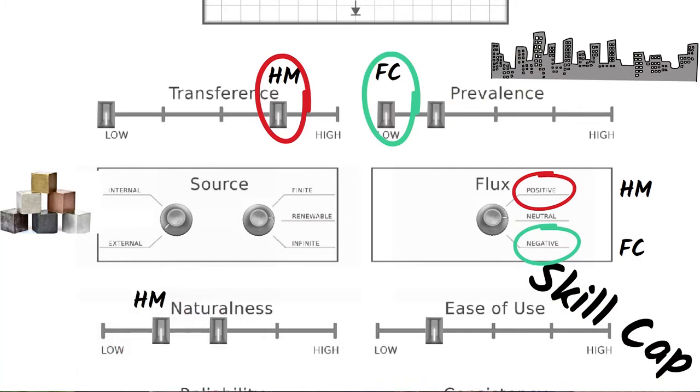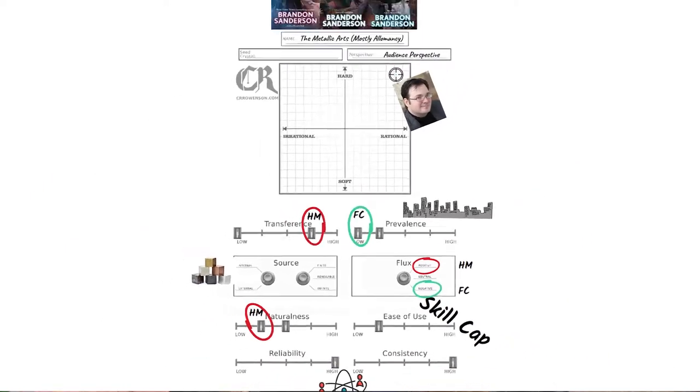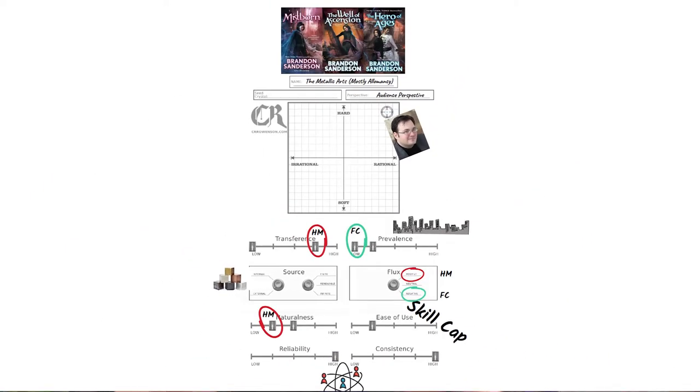At the end of the day, this is all subjective — you may disagree with some of these settings, and that's fine. But it's important that you know where you think they should sit, so when you go to build your mirrored magic system, you know how to set your own settings. If you want to know more about the Magic System Blueprint, I wrote an entire book on what the tool is, how to use it, and how to adapt it. Unsurprisingly, the book is called The Magic System Blueprint — you can buy it now on Amazon.